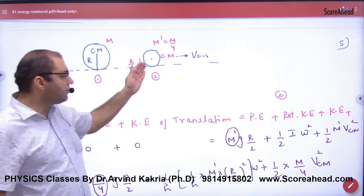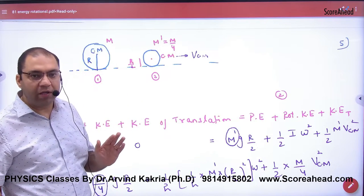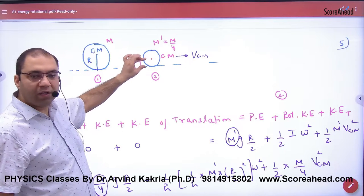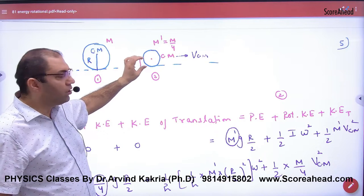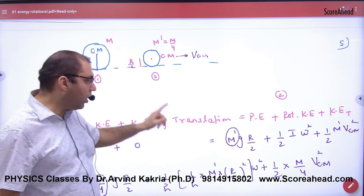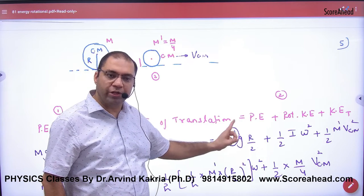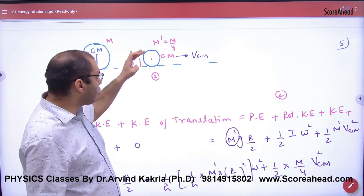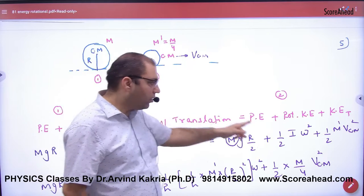Now this situation has come. In this situation, how much potential energy is there? The mass is M by 4, so M by 4 × g × R by 2. And how much energy of rotation? Half I ω².